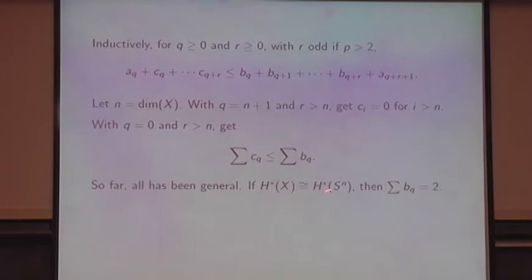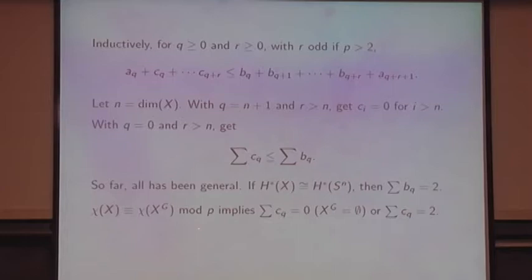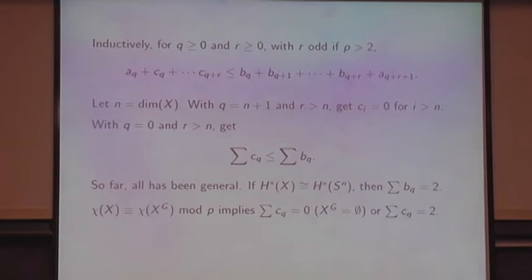So far everything has been general — this is a limitation on the cohomology of the fixed-point spaces for any finite dimensional GCW complex. But if the cohomology of X is the cohomology of an N-sphere, then the summation of BQ is 2: you've got the zero-dimensional cohomology group and the N-dimensional cohomology group. So there are not a whole lot of choices left for the C's. If we have the Euler characteristic congruent mod p, then either all the CQ are zero — in which case your fixed point set is empty — or by this congruence, you don't have the possibility that the sum is 1. That would be a point. And you just get a sphere.